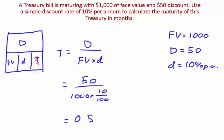But they want it in months. So it is 0.5 years because your rate was in years. So we just need to convert this into months. Naturally, 6 months.